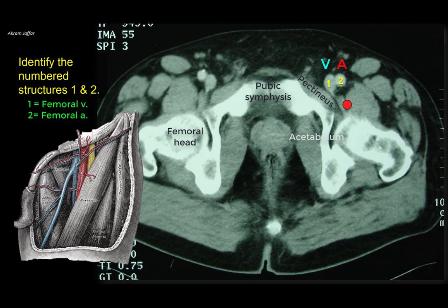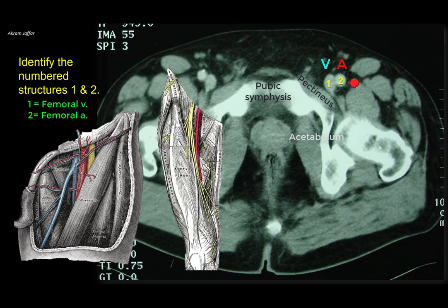You might ask about the femoral nerve. As it crosses the inguinal ligament, within one or two centimeters it divides into a tuft of branches — muscular and cutaneous — so it is no longer a sizable single nerve. We cannot detect it as a single nerve lateral to the artery at this level, but its location should be lateral to the artery and may be seen in a higher section.